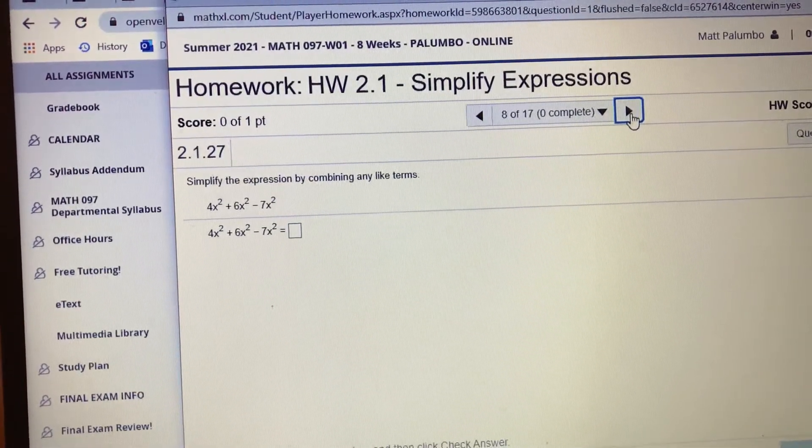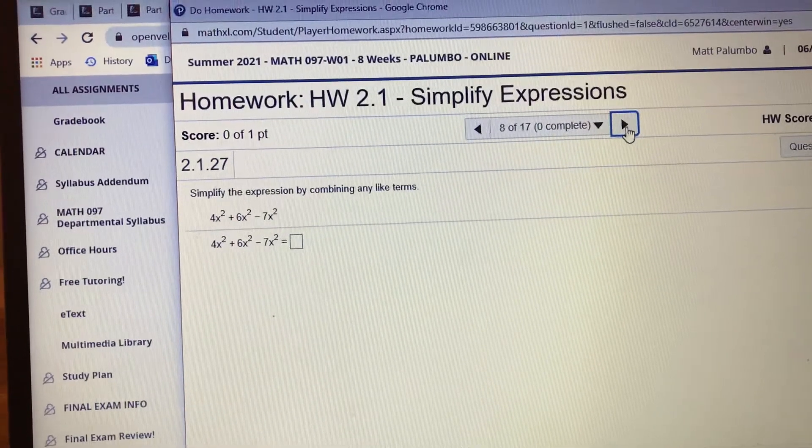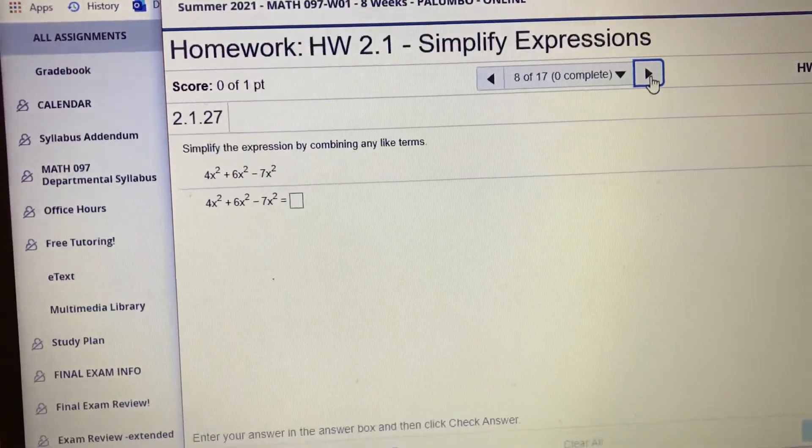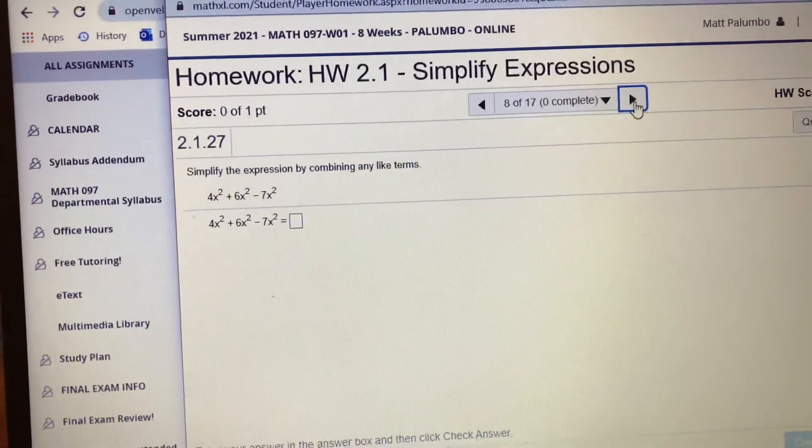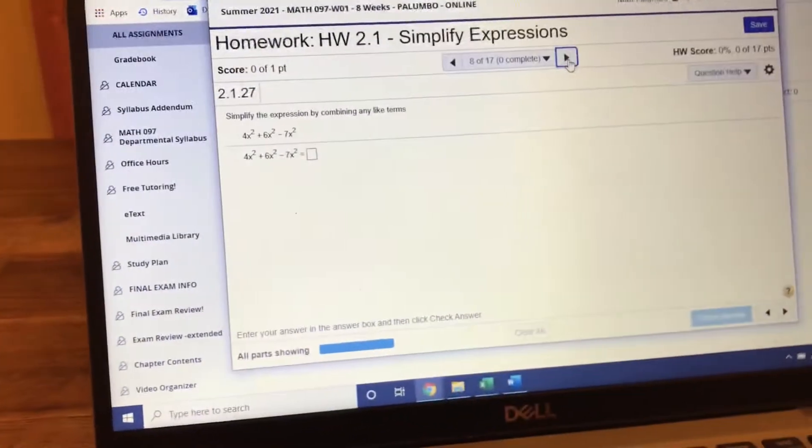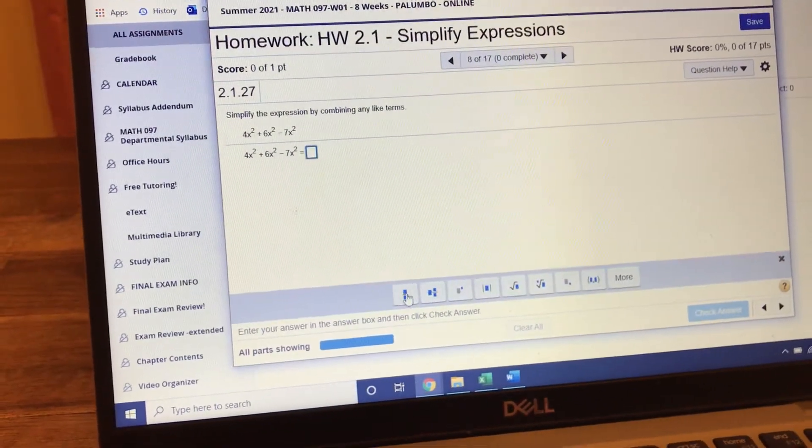Alright, let's look at how to enter an exponent into MyMathLab. So the answer for this problem will be 3x squared. When you click in the answer box, you're going to notice some buttons that open up on the bottom.